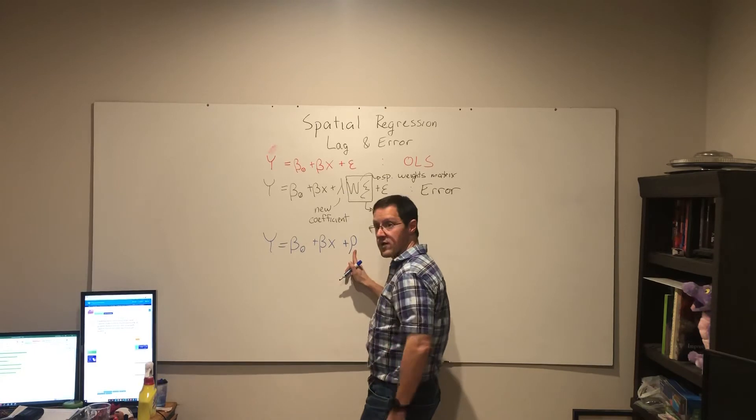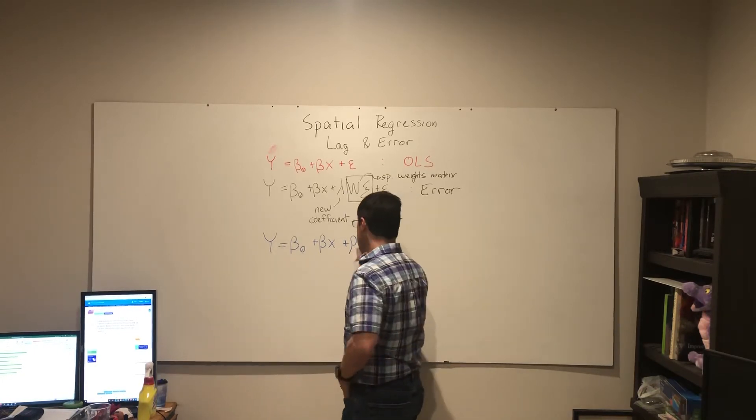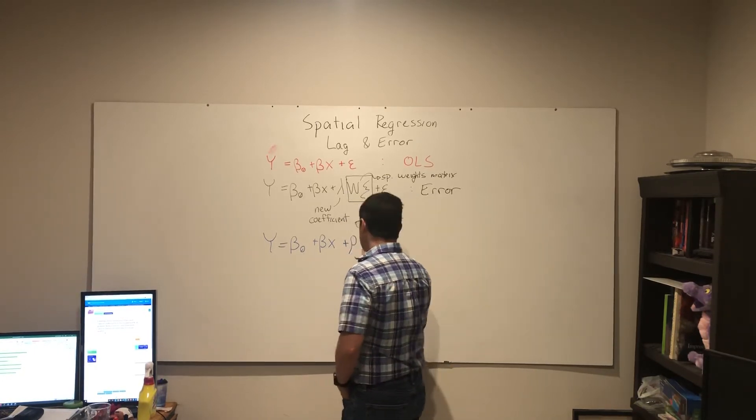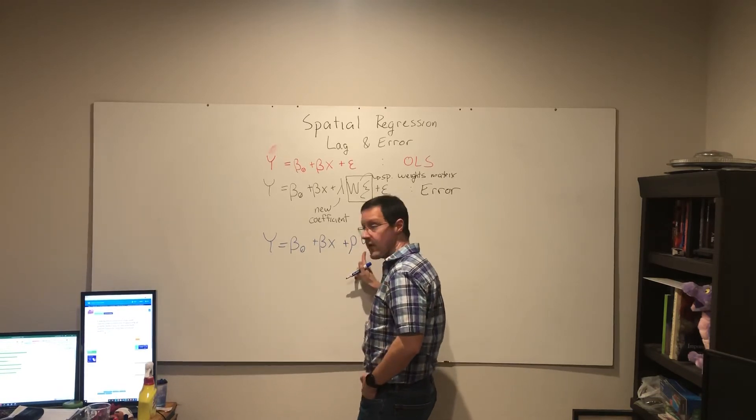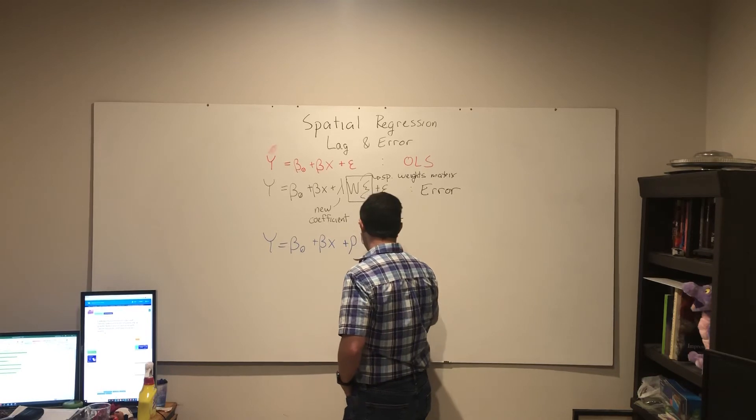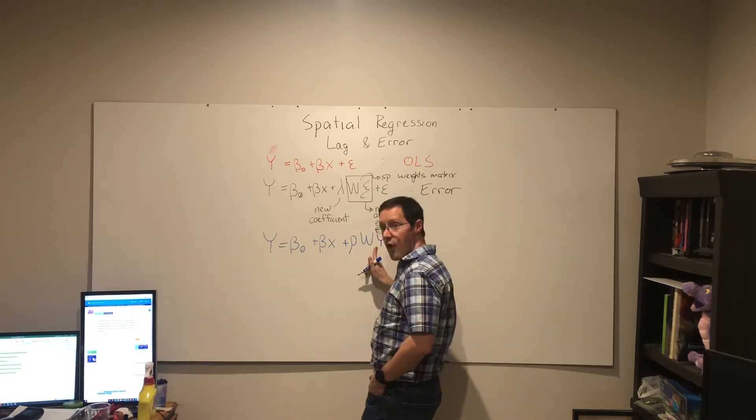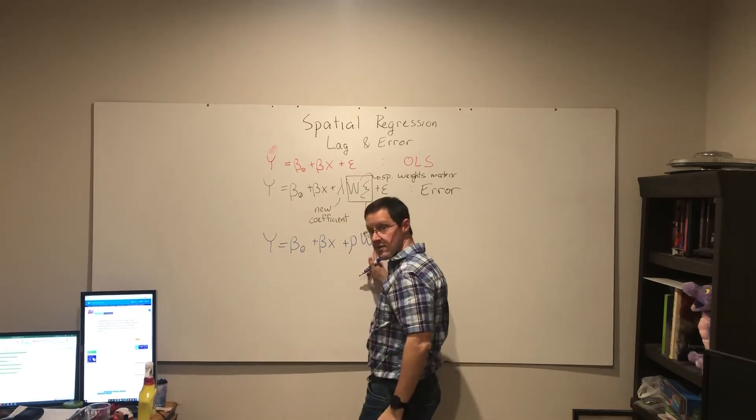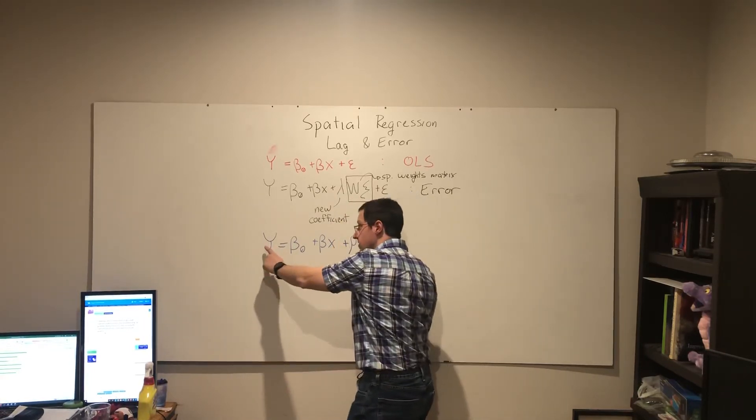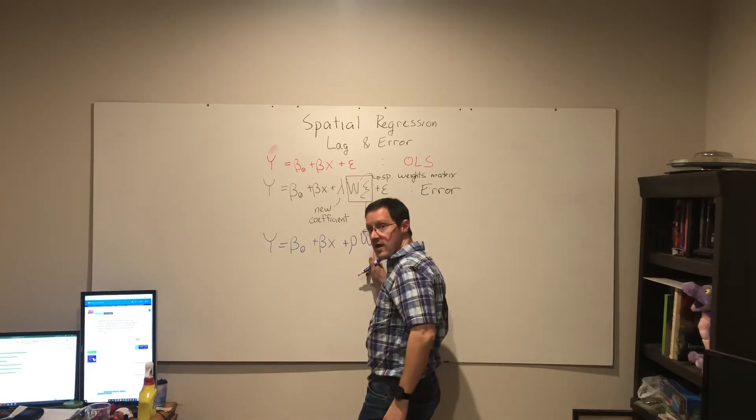To be distinct we use a different coefficient, a different Greek letter for the coefficient, but we still have our spatial weights matrix. But now instead of going with the errors at the neighbors, we're going with the dependent variable at the neighbors.